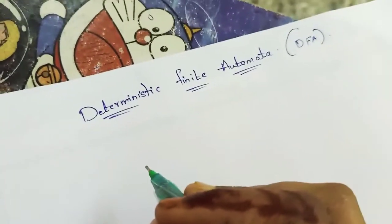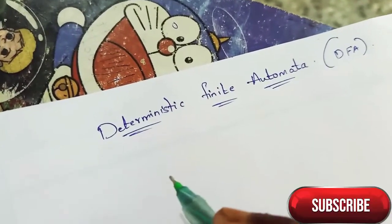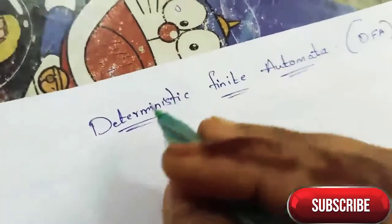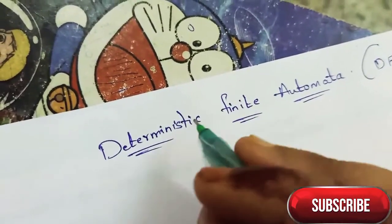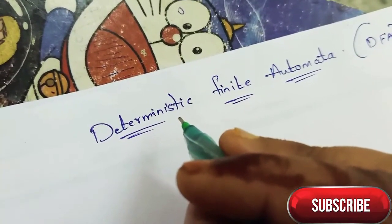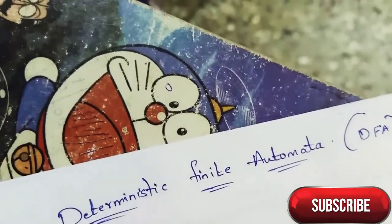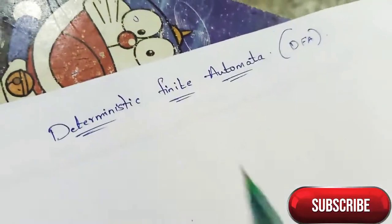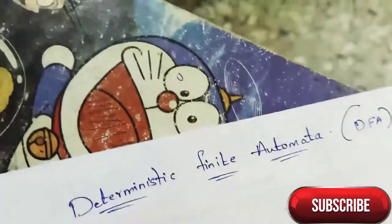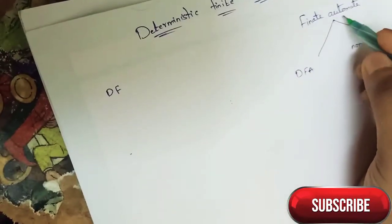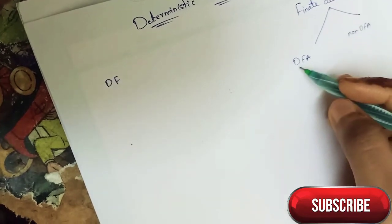Friends, today I'm going to show how to draw transition diagrams of DFA. DFA, deterministic finite automata, is one type of finite automata where it contains finite number of states. Finite automata contains two types: DFA and NFA, non-deterministic finite automata.